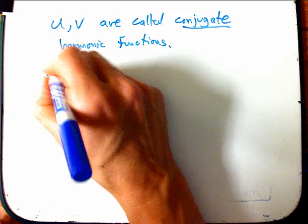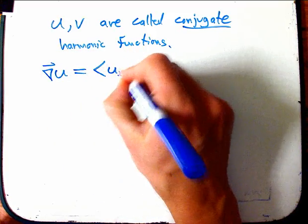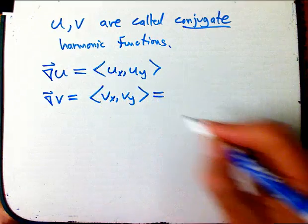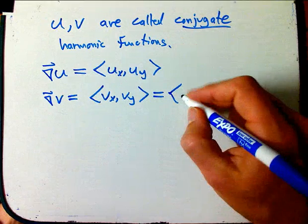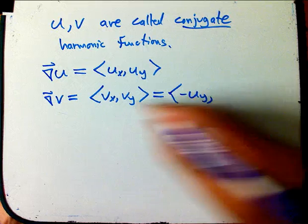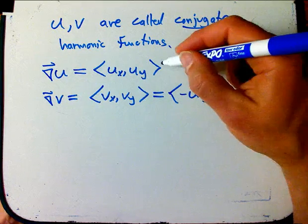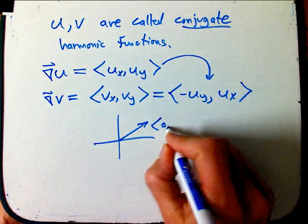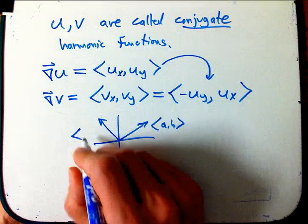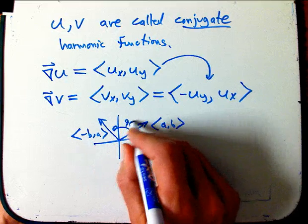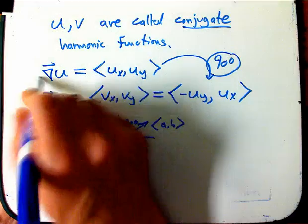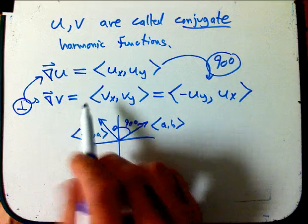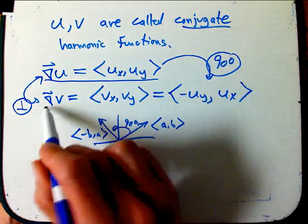Let me show you a consequence of this. Let me look at the gradient of U — that's just the vector field (ux, uy). And the gradient of V is (vx, vy). Using the Cauchy-Riemann equations: vx is minus uy, and vy is ux. Now, taking the vector (ux, uy) and turning it into (minus uy, ux) is exactly what happens if you do a 90-degree rotation. Any vector (a, b) turned into (minus b, a) rotates it by 90 degrees. So the gradient vectors of U and V are going to be perpendicular to each other, in a very systematic way — you just rotate them 90 degrees.